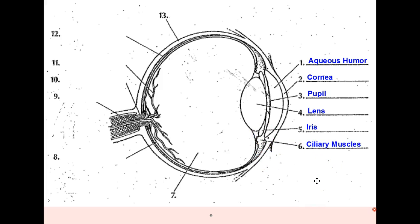Number 6 are the ciliary muscles. As you get older, these tend to weaken. Many of us then require reading glasses.